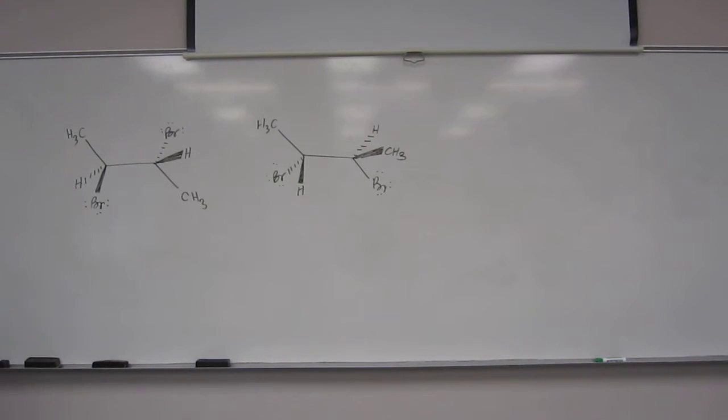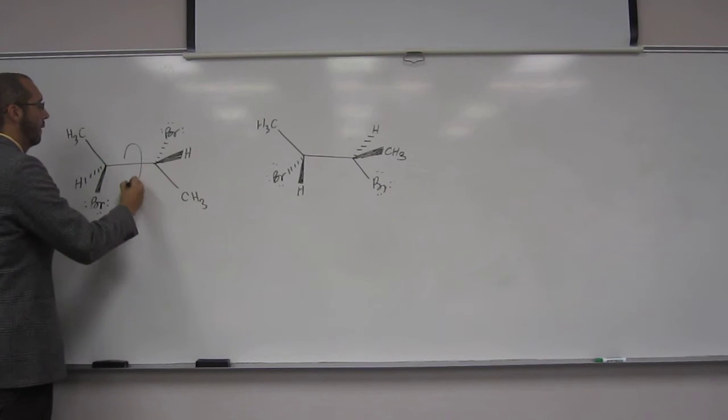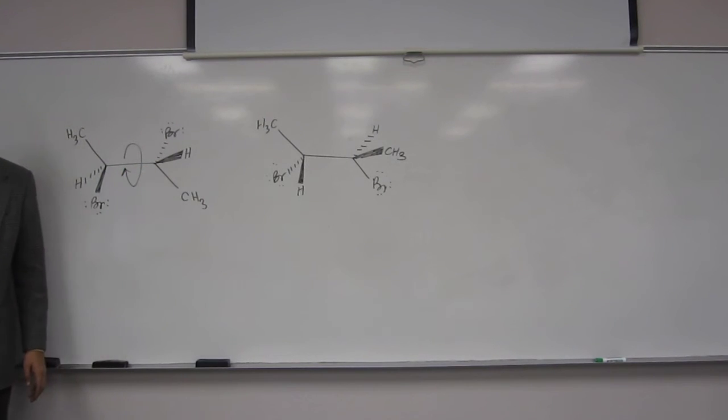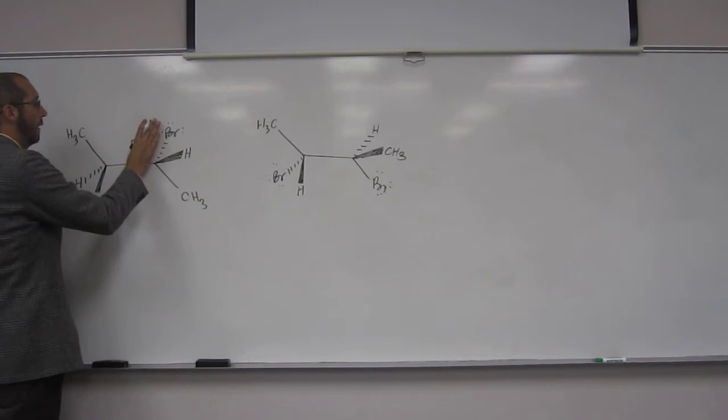Okay, so the first thing you want to do is turn one of these. Remember you can rotate around sigma bonds, right? You guys remember that? So I would turn one of these to conformations that's the same as the other one, and see if they line up.